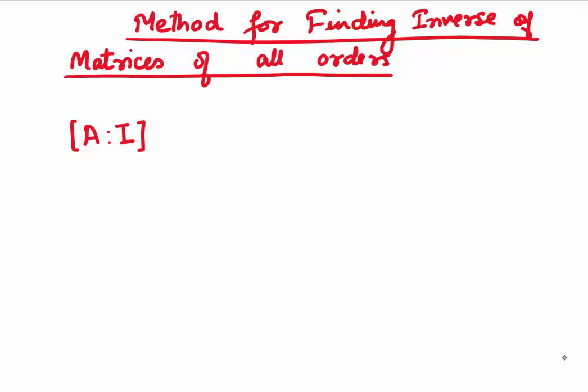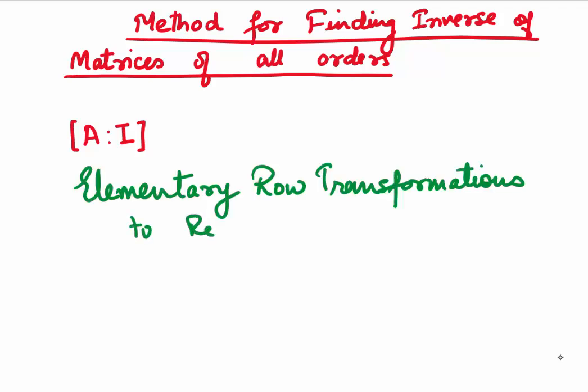Let's now look at a method which can be used for matrices of all orders. In this method, we start with our matrix A along with the identity matrix I, forming an augmented matrix, and we do elementary row transformations to reduce matrix A to I. Whatever changes happen to I give us A⁻¹. This is how elementary row transformations help us find the inverse of a matrix.